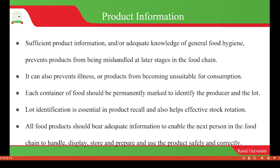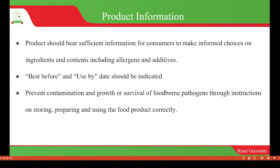All food products will bear adequate information to ensure the next person in the food chain can handle, display, store, prepare, and use the product safely and correctly. If there is no adequate information or knowledge, it will be hard for the individual to handle the food safely and correctly.